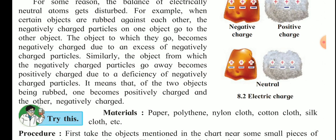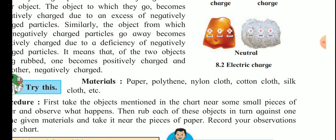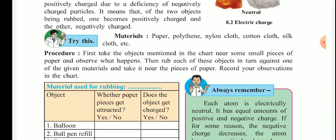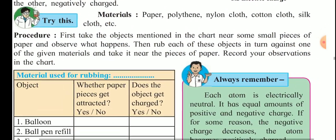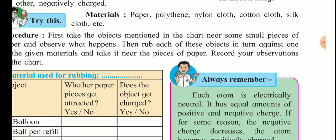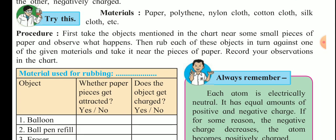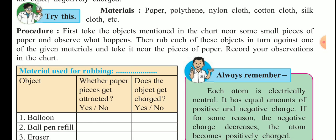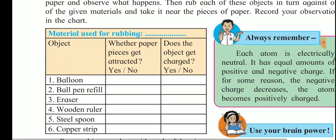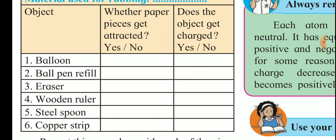Now you have understood how charges develop on an object. Here is an activity to perform at home. Take a paper, polythene, nylon cloth, cotton cloth, and silk cloth. Take six objects: a balloon, ball pen refill, eraser, wooden ruler, steel spoon, and copper strip — all available at home. First, take each object near small pieces of paper before rubbing and observe what happens.